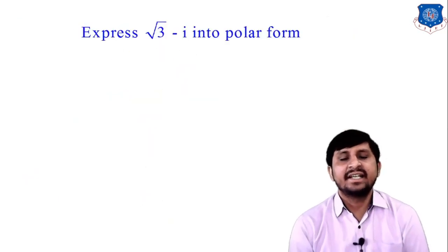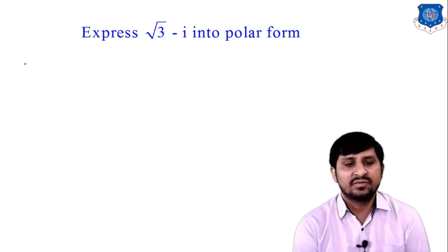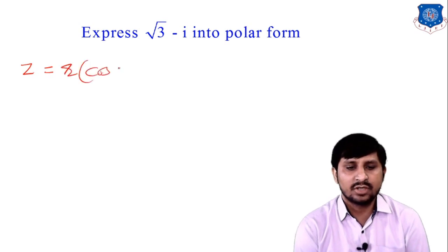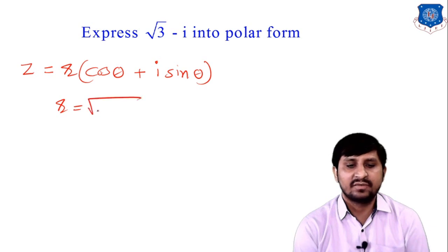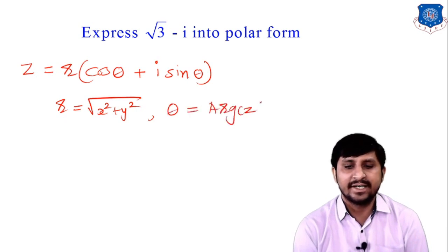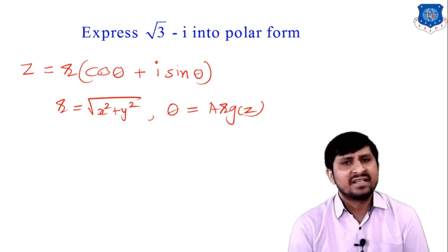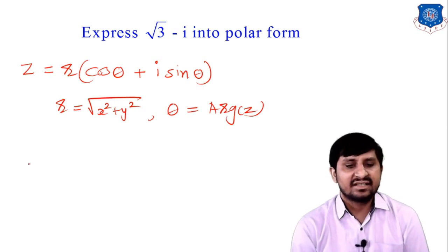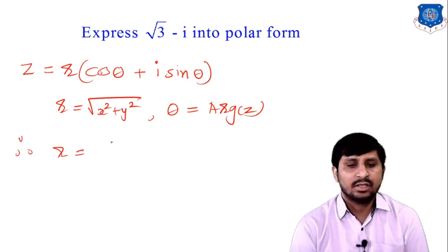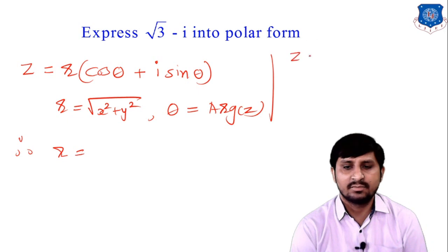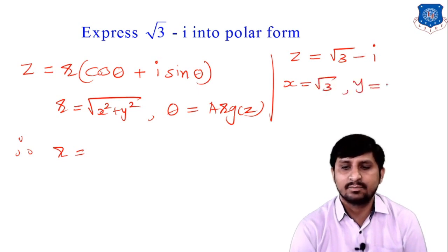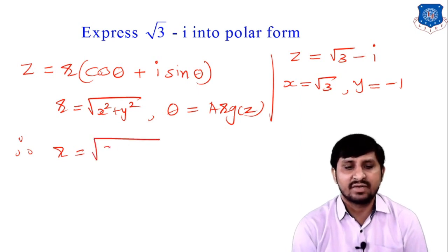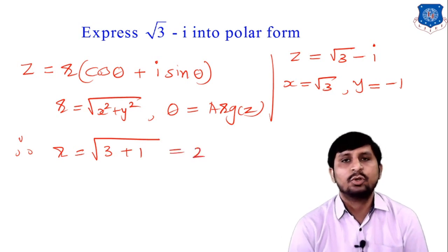Next example: express √3 − i in polar form. The polar form is z = r(cos θ + i sin θ), where r = √(x² + y²) and θ is the principal argument. Here z = √3 − i, so x = √3 and y = −1. Therefore r = √(3 + 1) = √4 = 2.